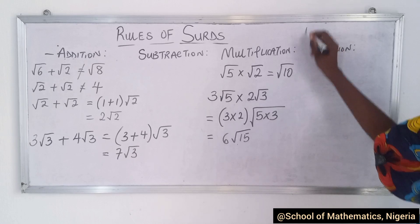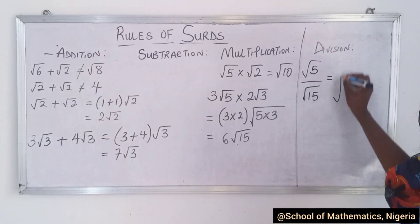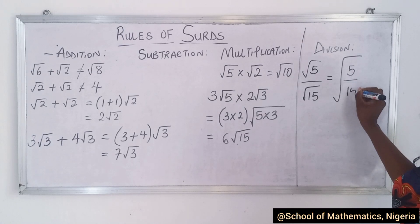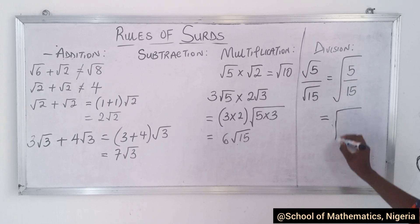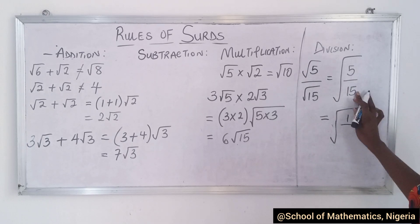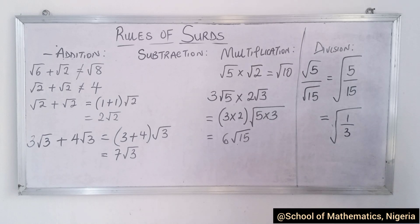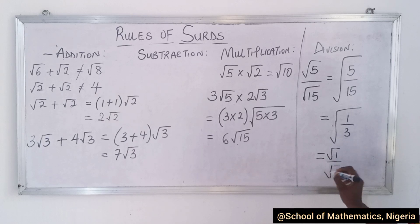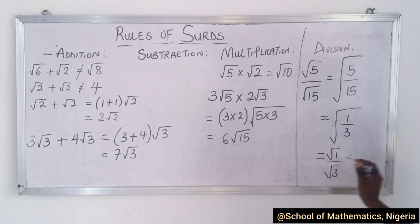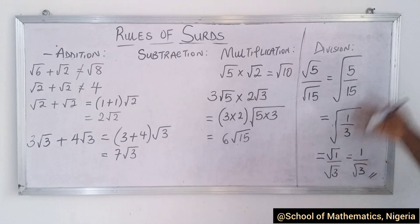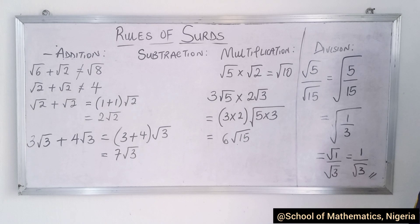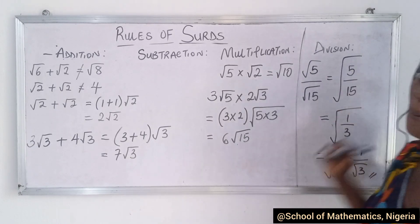For division, you can write it with a division sign covering the whole expression and then simplify. For example, 5 and 5 cancel to 1, and 5 into 15 gives 3, so you can separate it back again. You then get 1 over root 3. Since the root of 1 is 1 and root 3 is not exact, we preferably leave it in surd form — 1 over root 3 — as the final answer.